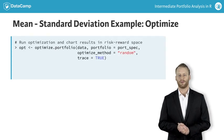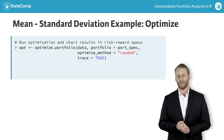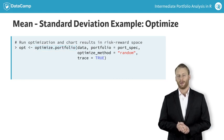In this slide, you see how to run the optimization and visualize the results of the optimal portfolio. To run the optimization, call the function optimize.portfolio, passing in the returns data, portfolio specification object, and optimization method. Note that you specify optimize_method equals random to use the random portfolios algorithm to solve the problem.